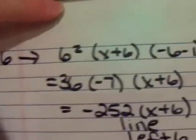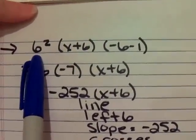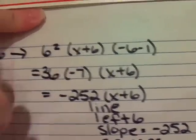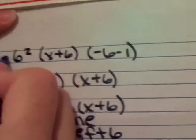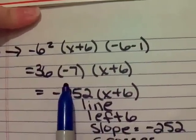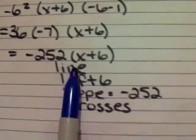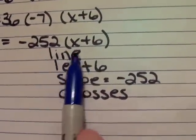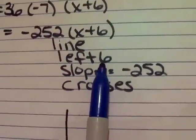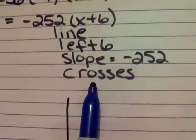When we test out the negative 6, we substitute negative 6 into the x squared, and we get 36, times negative 7, times x plus 6. Then we come up with negative 252 times x plus 6. That again is a line, and we can see from this part of the equation that it's moved left 6, and our slope is negative 252. And that will also cross.